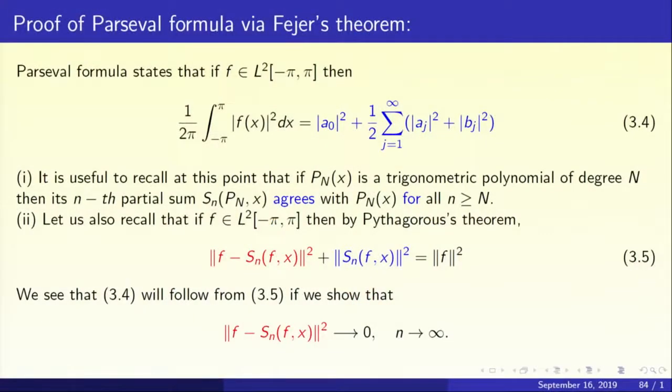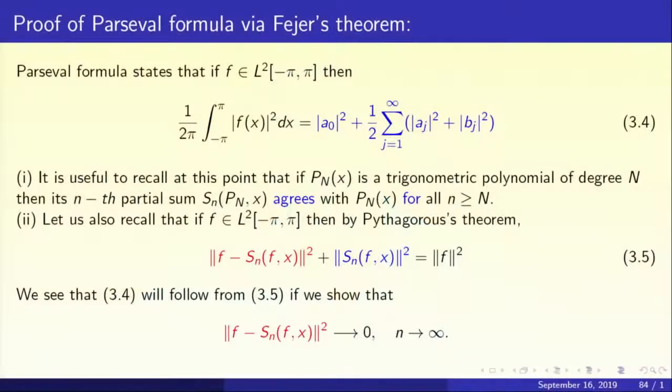So we have approximated an L2 function f by a trigonometric polynomial P in L2 norm. This approximation is going to be extremely important in the next item: we are going to prove the Parseval formula. Remember that in Module 2 we discussed Bessel's inequality and the Parseval formula, and I said the Parseval formula could not be proved right then. Now we are ready to prove it, because we have Theorem 28 — any L2 function can be approximated by trigonometric polynomials in L2 norm. That was the crucial ingredient.